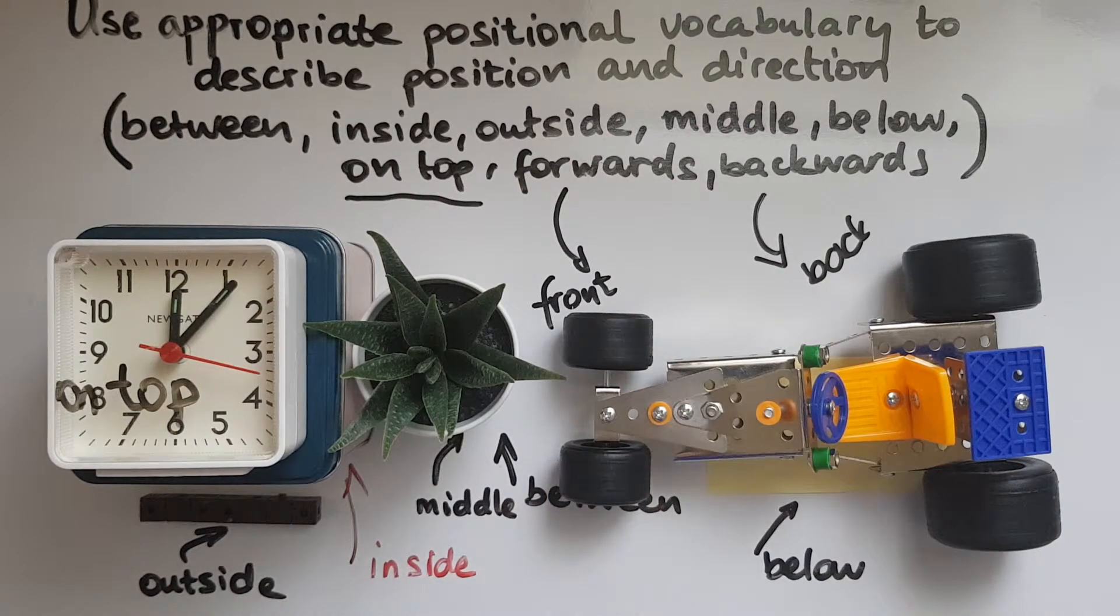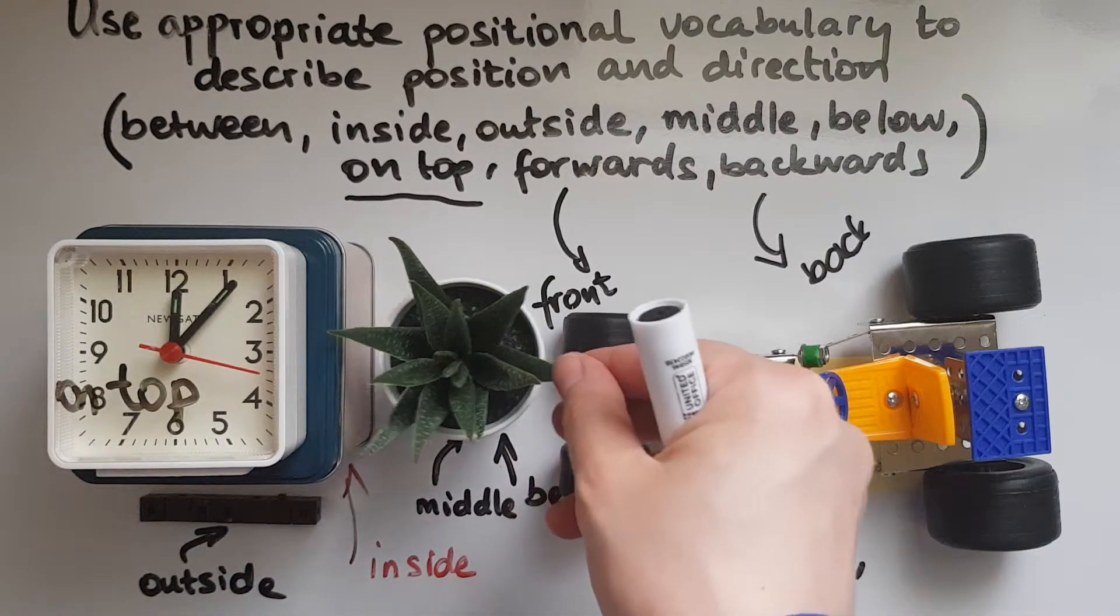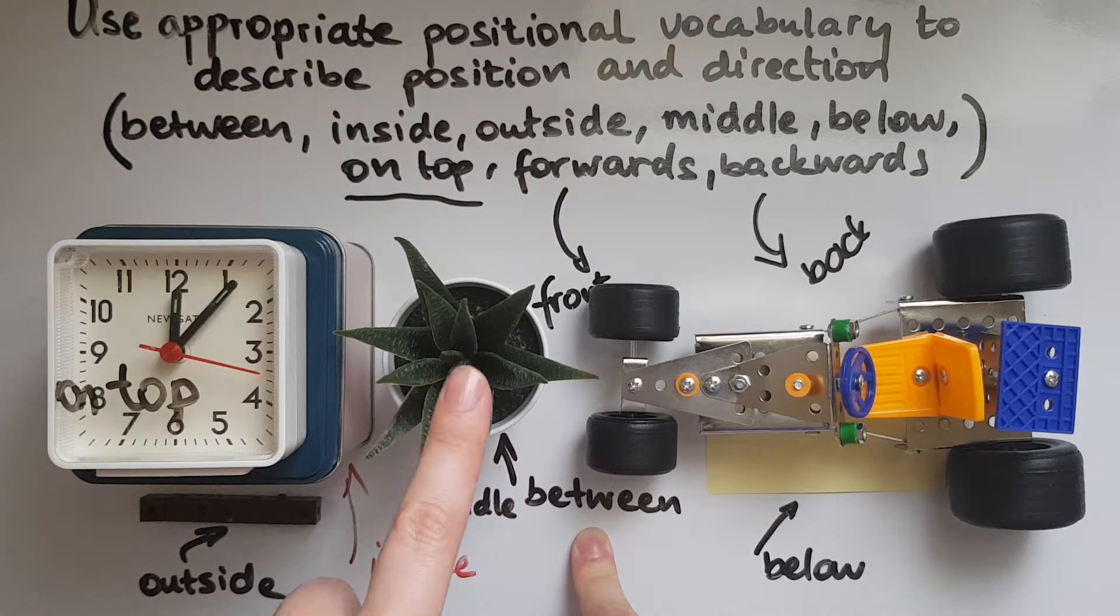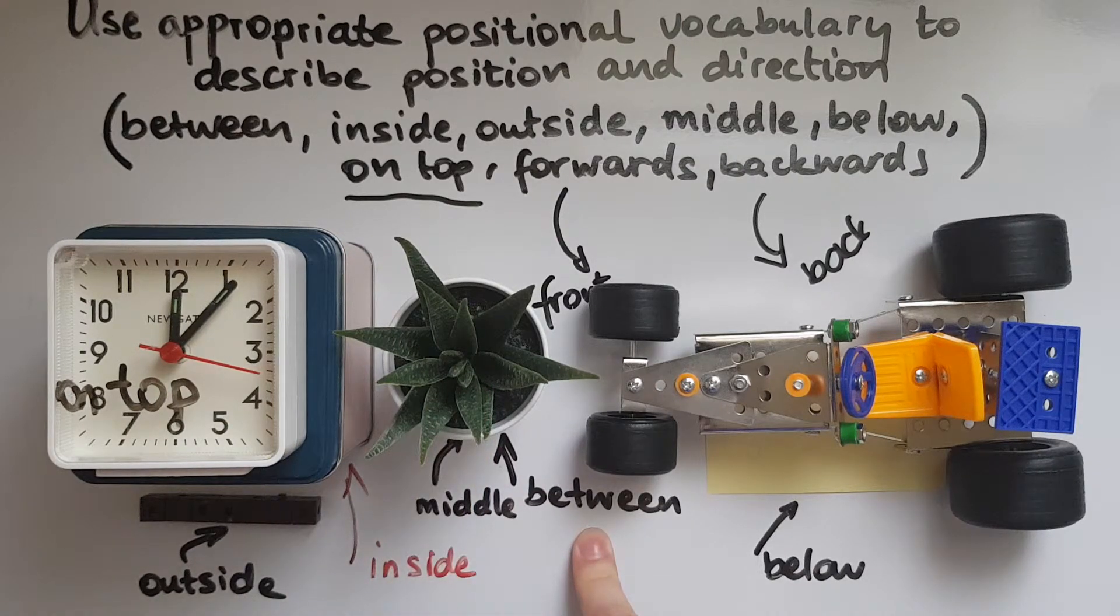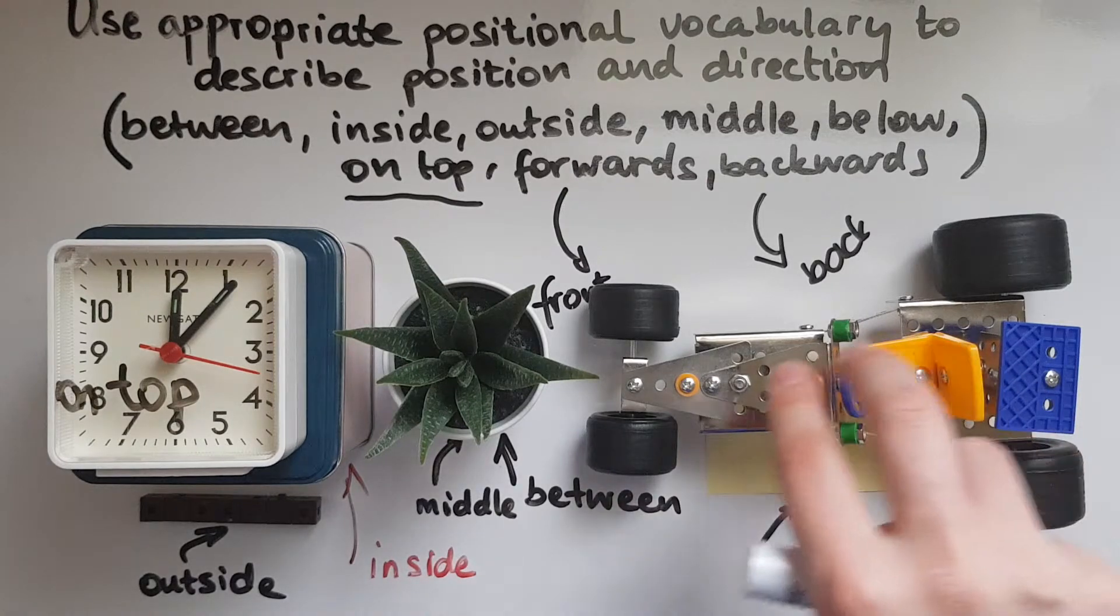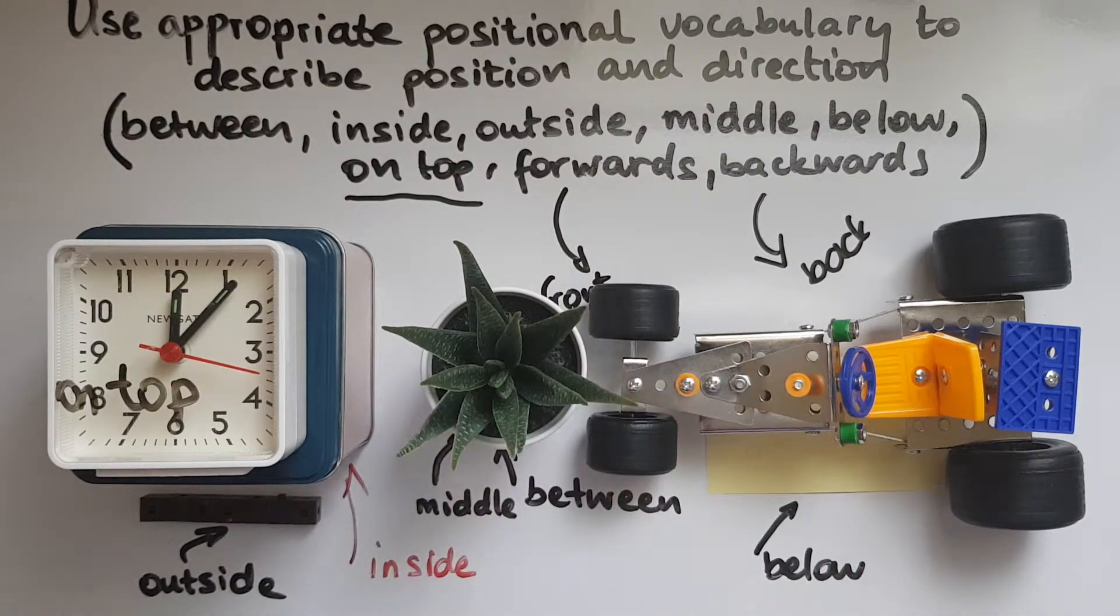So let's recap. We had the between one, between or the middle. We have this plant being in between the toy car and the tin. But it's also in the middle. It's not on the right. It's not on the left. It's somewhere in the middle.